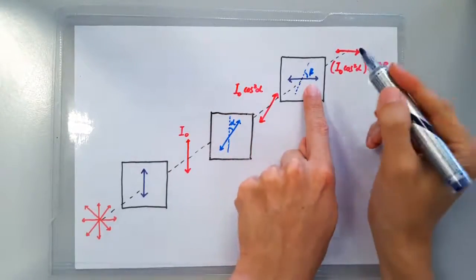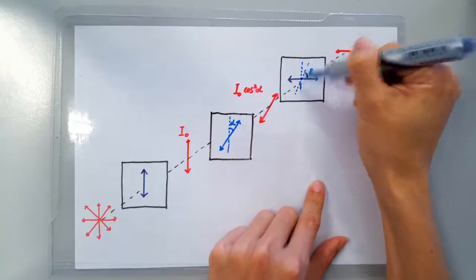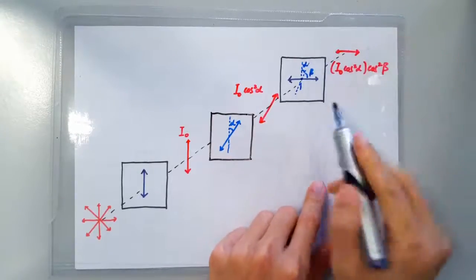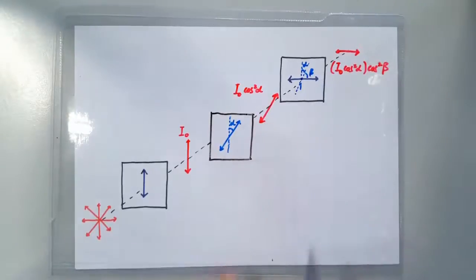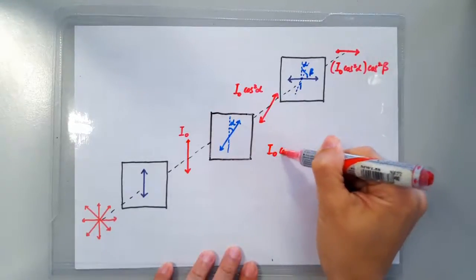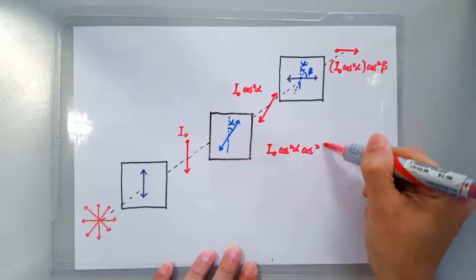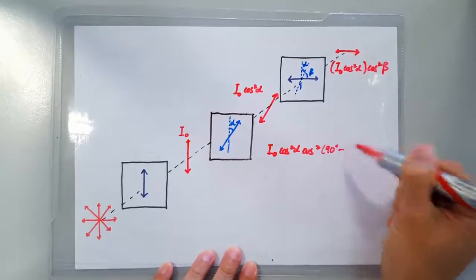Beta is of course 90 degrees minus alpha because alpha will sit right here. So beta is in fact 90 degrees minus alpha. So the final intensity here, I can write it as I₀ cos² alpha cos² (90° - alpha).